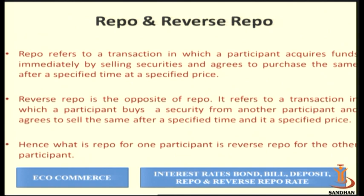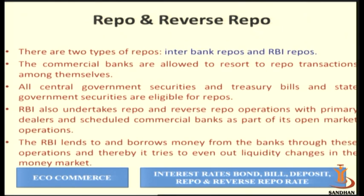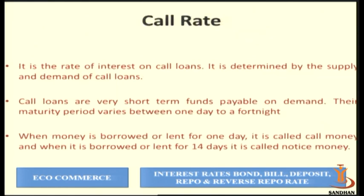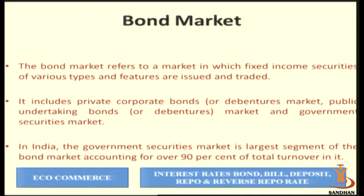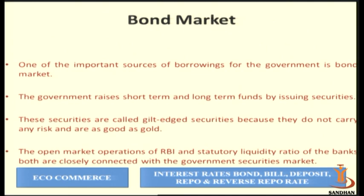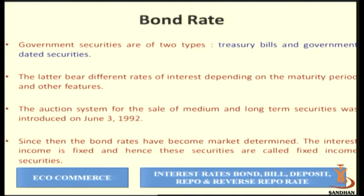Either the RBI needs funds from commercial banks or commercial banks need funds from RBI — in both cases a rate is charged: repo rate or reverse repo rate. There are two types of repos: interbank repos and RBI repos. The call rate is a rate of interest on call loans based on supply and demand. The bond market rate is related to government securities rates.